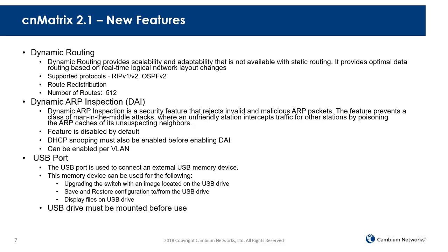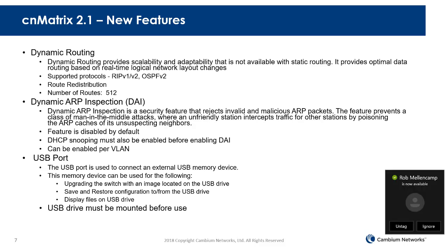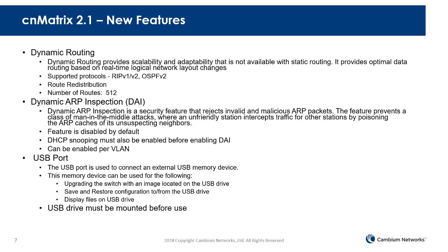The next feature to highlight is dynamic ARP inspection. Dynamic ARP inspection is a very important security feature that will protect you against malicious users poisoning your ARP table. The USB port is a port on the front of the switch — it's always been there but was not activated until now. With 2.1, you can use the USB port to transfer files to and from the switch, upgrade the switch's image using a USB drive, and save and restore the configuration to and from the USB drive. You can also display the files located on your USB drive.